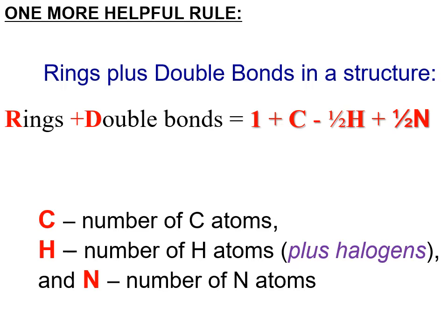The next convenient rule is rings plus double bonds in a structure. When you have a molecular formula, you derive the number of rings plus double bonds — you cannot differentiate between the two. The formula is: 1 plus the number of carbons, minus one-half the number of hydrogens, plus one-half the number of nitrogens. The number of oxygens and sulfur does not matter, and halogens such as chlorine, bromine, and iodine count as hydrogens.